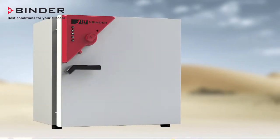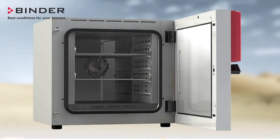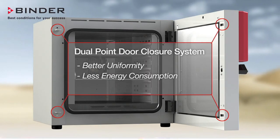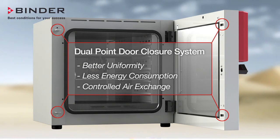A dual-point system creates a more uniform seal and even door closure, giving you better uniformity, less energy consumption, and more controlled air exchange.